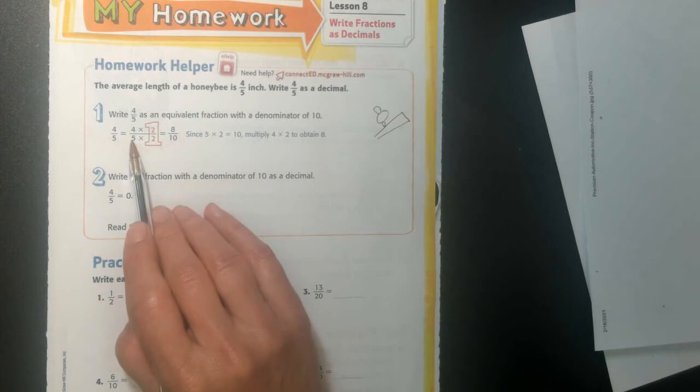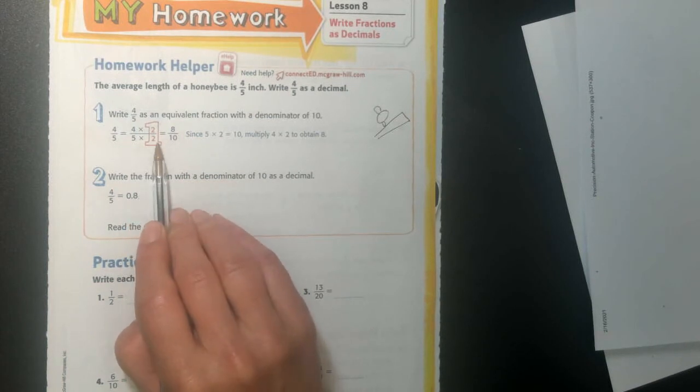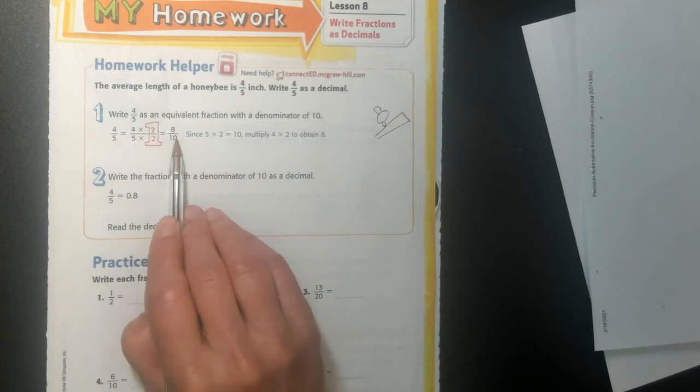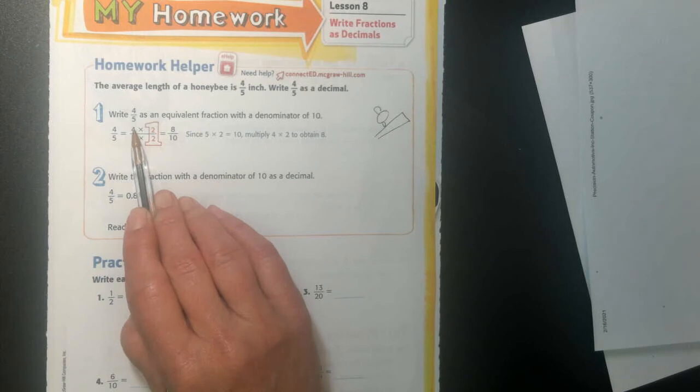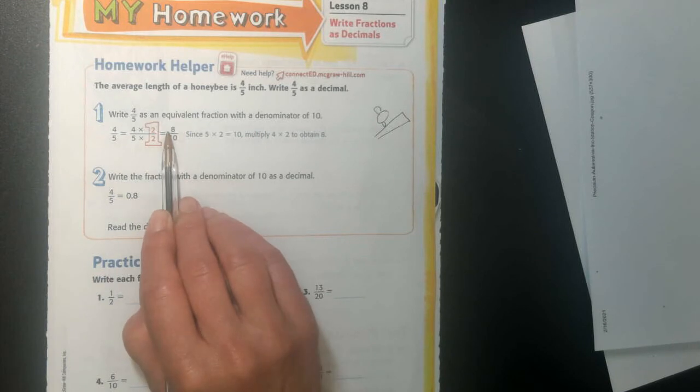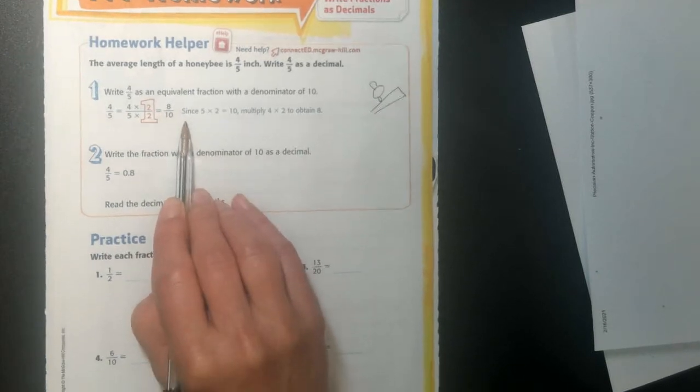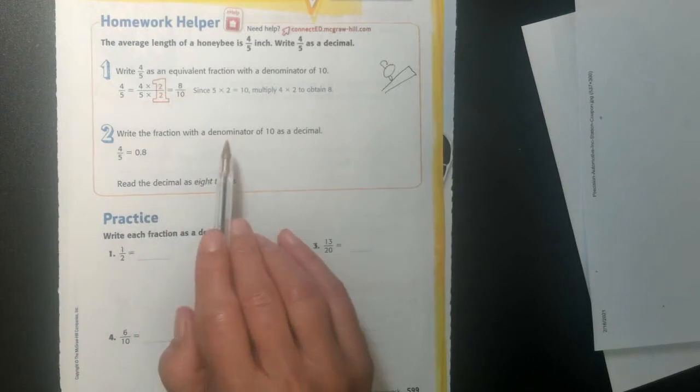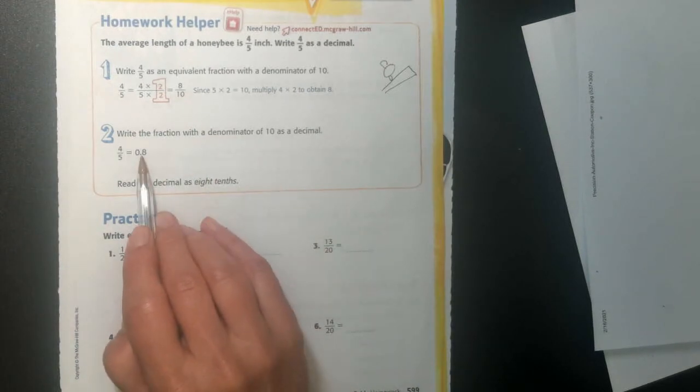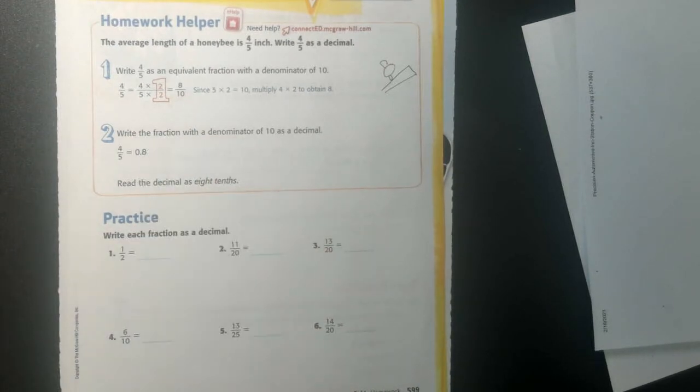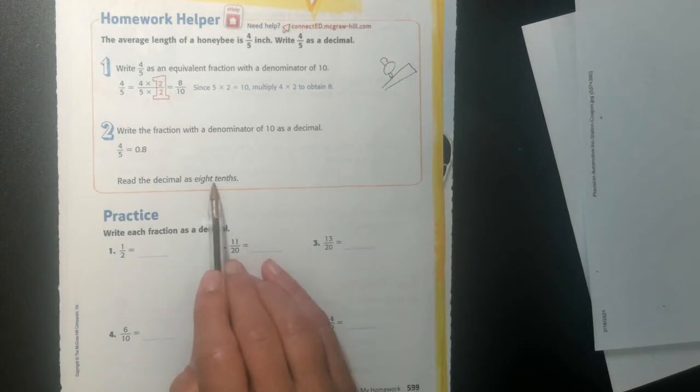So I'm going to change my fifths into tenths. So to change my fifths into tenths, I multiply times 2. So whatever I do to the bottom, I have to do to the top. 5 times 2 is 10, 4 times 2 is 8. So then I just write my fraction with the denominator of 10. It's easy, right? I do 0.8. And I would read this, and I would say 8 tenths.